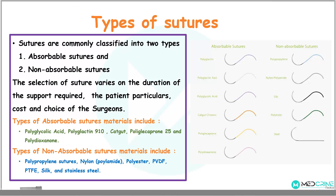The types of absorbable suture materials include polyglycolic acid, polyglactin-910, catgut, polyglycaprone-25, and polydioxanone. On the other hand, the types of non-absorbable suture materials include polypropylene, nylon, polyester, PVDF, PTFE, silk, and stainless steel.